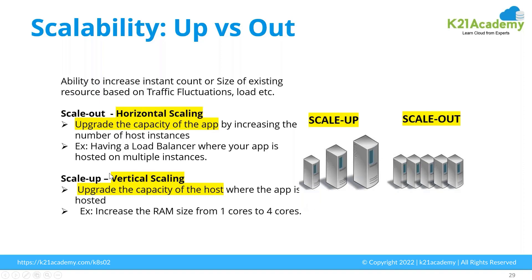For vertical scaling, you usually require downtime because you are adding resources to an existing application, though in some scenarios it can be done on the fly. Mostly, about 80% of the time, vertical scaling requires downtime to scale up. For horizontal scale out, no downtime is needed — you are simply adding more workloads. That is the key difference between horizontal and vertical scaling.